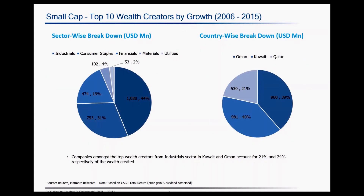This is the sector-wise and country-wise composition of the small cap wealth creators. Unlike mid-cap and large-cap, other industrial sector-related companies dominate this space and there is limited presence of financial services. This can also be attributed to the size of financial services companies, which are mostly large. There is only one company from the utilities sector that has made it to this list — Oman-based United Power Company — and most of its wealth created for investors has been in the form of dividends, with the highest dividend yield of close to about 31%.